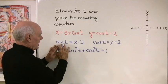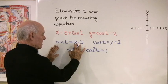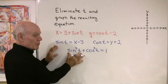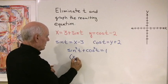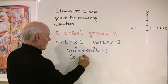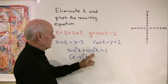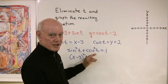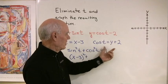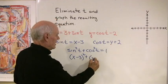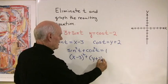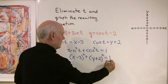So I know that sine t is equal to x minus 3. Well this is the sine of t quantity squared, that's what that notation stands for. So this is going to be x minus 3 quantity squared plus cosine squared t or cosine of t quantity squared. Well cosine of t is y plus 2, so that's going to be y plus 2 quantity squared equal to 1.